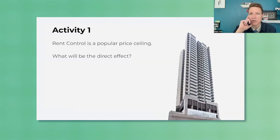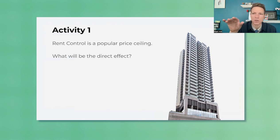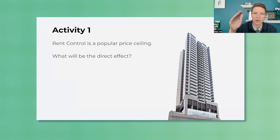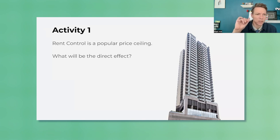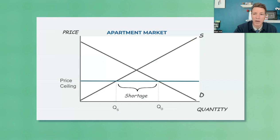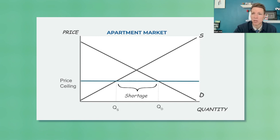All right, first activity. This day is built around two activities — one is a price ceiling, the other is a price floor. The most popular price ceiling, or the one you see most often, is rent control. Rent control is when rents can't go above a certain amount. Good intentions — to give renters a lower price or a maximum price that can't go above a certain amount. This is a price ceiling on apartments. The direct effect, if students know price ceilings by now, would be a shortage — more people trying to get a rent-controlled apartment than there are available.